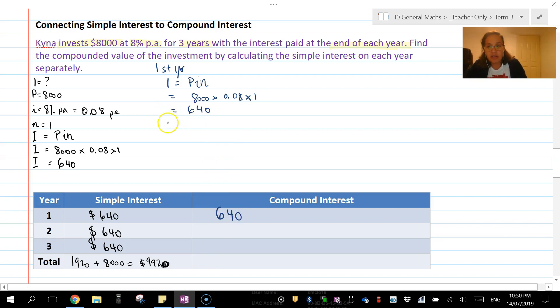New principal for the second year: P = initial + $640, so our new principal is $8,640. Second year interest: $8,640 is my new principal, but the interest rate is still the same and the year is still the same. That gives us a new value of $691.20.